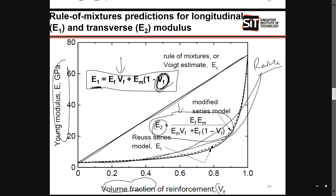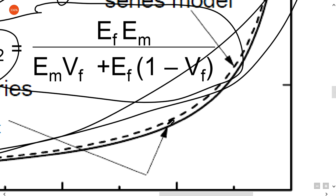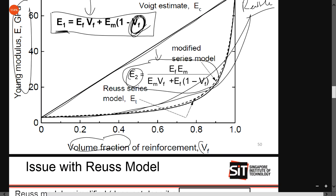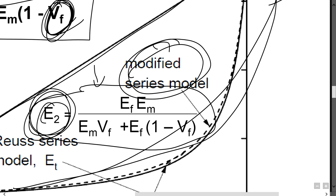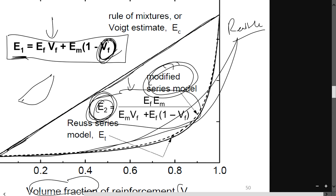There is a dotted line on the graph — this is the modified series model for the E2 transverse curve. The modified model most probably models the real-life system better than the theoretical one. The theoretical curve looks like one shape, while the modified series model represents the real system, which as you can see curves somewhat differently.